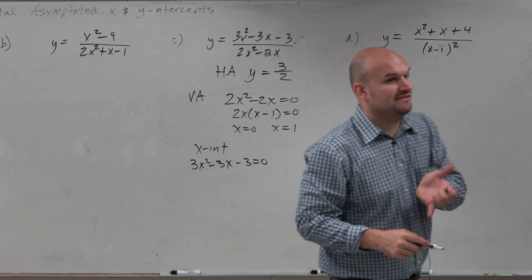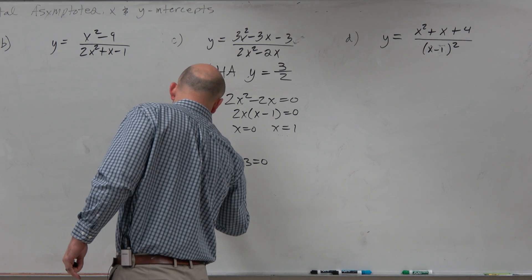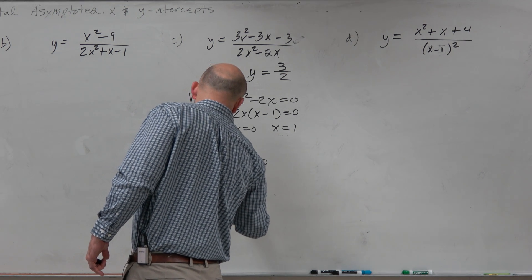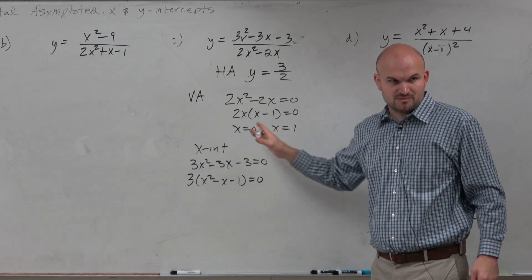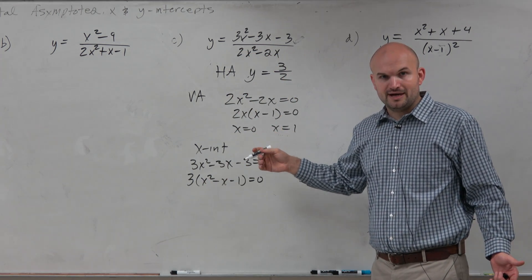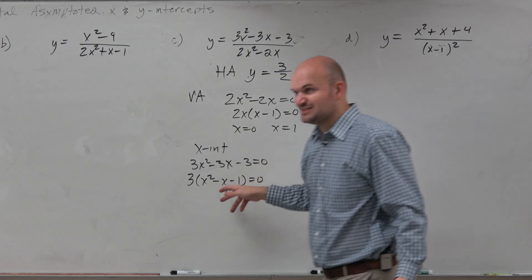So the first thing I notice is they all have a 3 in front. So I'm going to get the 3 out. And then I look to factor this to make sure that one of these asymptotes is not a hole. And then I realize that, uh-oh, I have a problem. This isn't factorable.